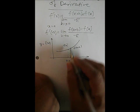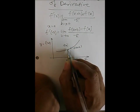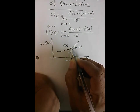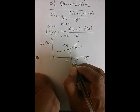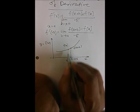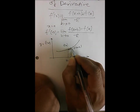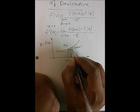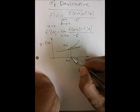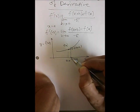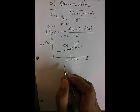Now f(a) is the height of this line and f(a+h) is the height of this line. So if we take this difference, which is f(a+h) minus f(a), then we get the difference between the height values of these two functions.